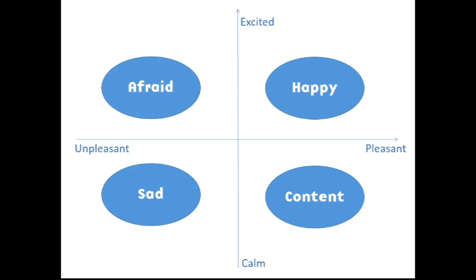Whenever I teach about core effect space to pet owners or animal professionals, I usually do an exercise. What does your animal look like when it's experiencing emotions in these different quadrants? Which types of behaviors would you see? How do you know what mood they're in?